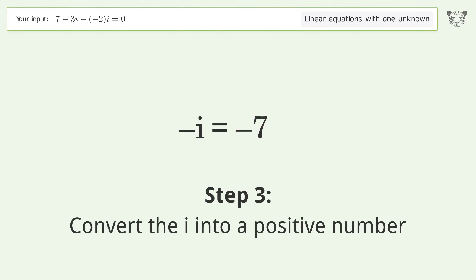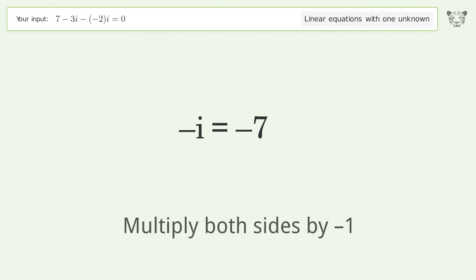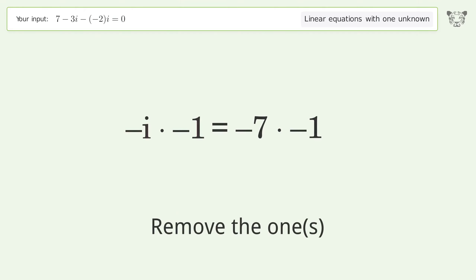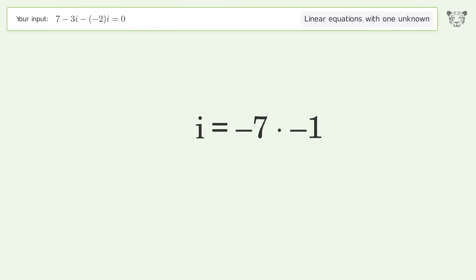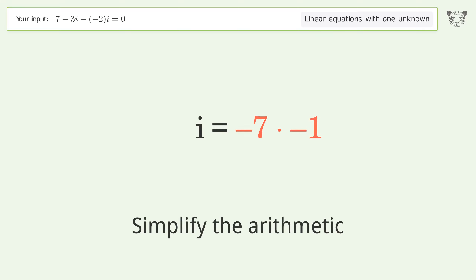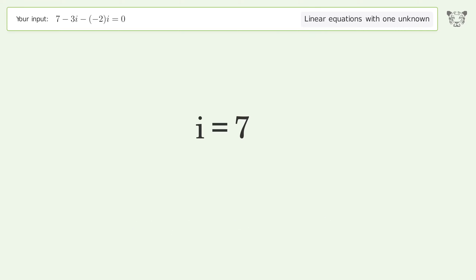Convert i into a positive number by multiplying both sides by negative one. Remove the ones and simplify the arithmetic. And so the final result is i equals 7.